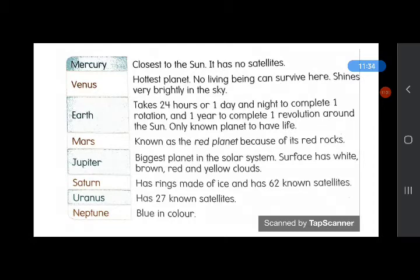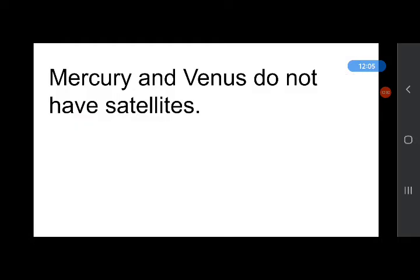Mars is known as the red planet because of its red rocks. Jupiter is the biggest planet. Its surface has white, brown, red, and yellow clouds because it's a gas giant. Saturn has rings made of ice and has 62 known satellites. Uranus has 27 known satellites. Neptune is blue in color. Mercury and Venus do not have satellites. Planets rotate or spin like tops on their axis. Axes are imaginary lines. Each planet has its own path around the sun and hence does not bang into each other.